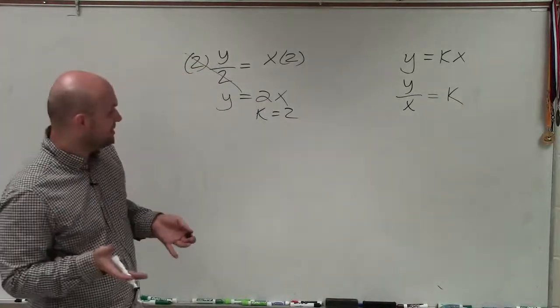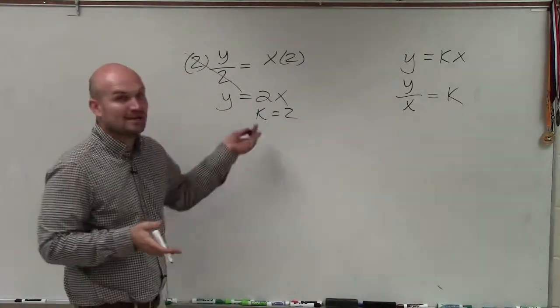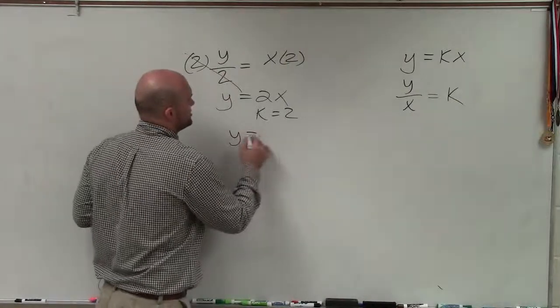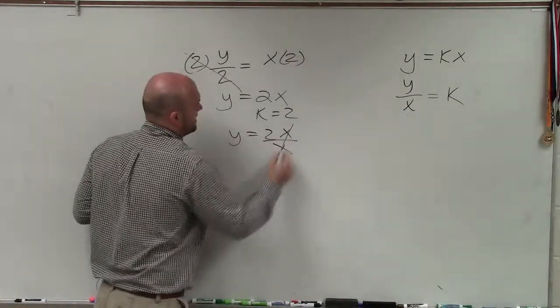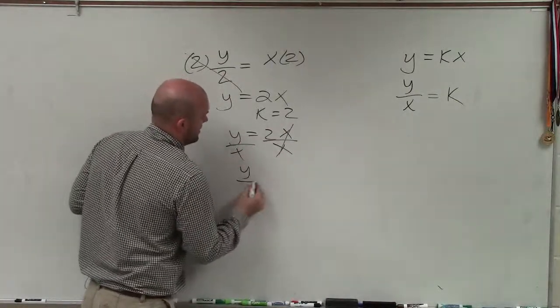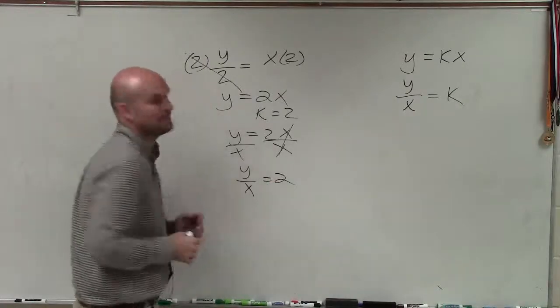So therefore, ladies and gentlemen, this is an example of a direct variation where my constant is going to be 2. I can also rewrite it in the other form just by dividing my x on both sides, so I could have y over x is equal to 2. Thanks.